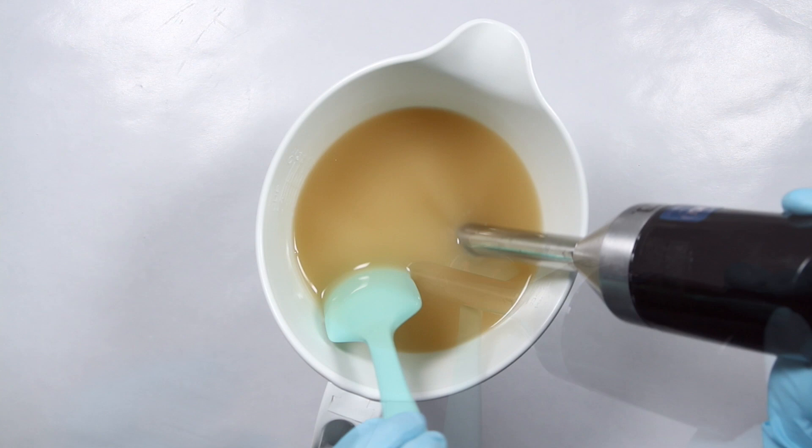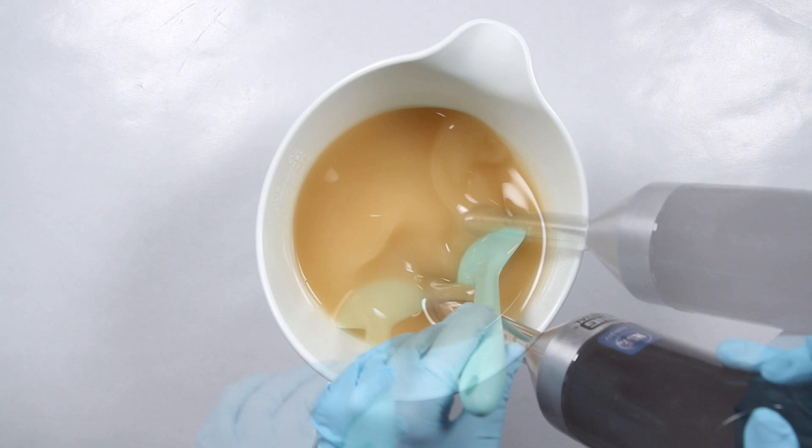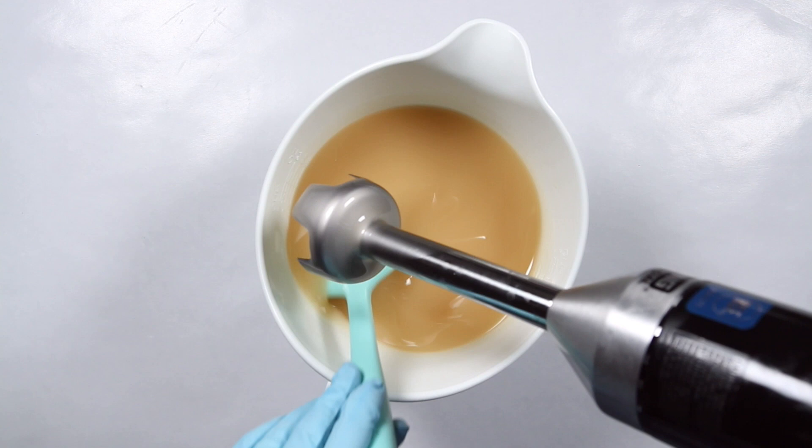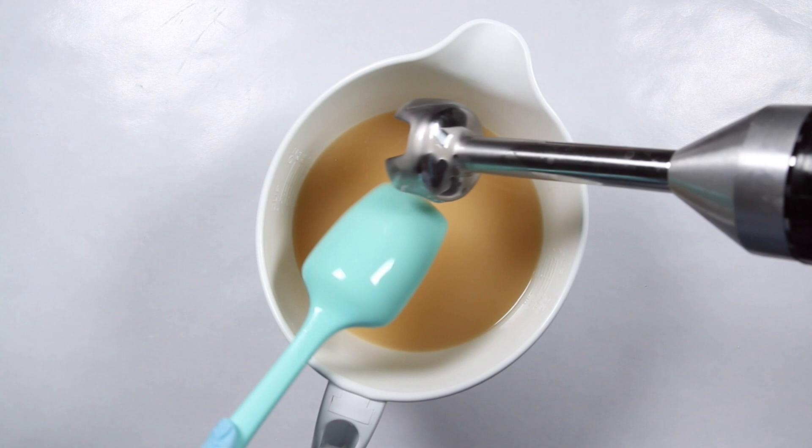I wanted to stop blending when I reached emulsion, so I kept checking the stick blender shaft for any signs of oil beading or separation. Even though the batter was quite thin at this point, it looked very smooth and uniform so I stopped blending. I knew I still had a lot of stirring to do and I could also blend more later.